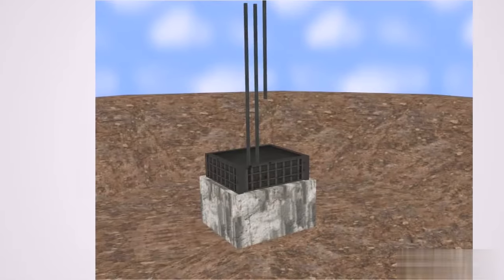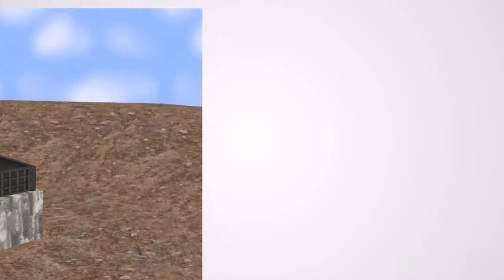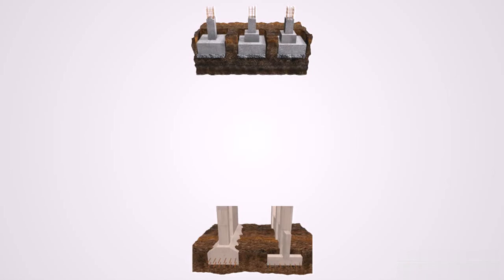If the bearing capacity of soil at shallow depth is sufficient to safely take the load of the structure, then a shallow foundation should be provided. Isolated footing, combined footing, or strip footing can be options for shallow foundation. However, if the soil immediately below the structure does not have adequate bearing capacity, then you should use a deep foundation.